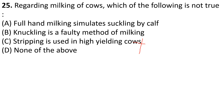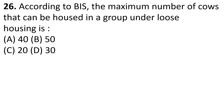Full hand milking is similar to suckling by calf. Knuckling is a faulty method of milking. According to BIS, the maximum number of cows that can be housed in a group under loose housing is Option A: 40.